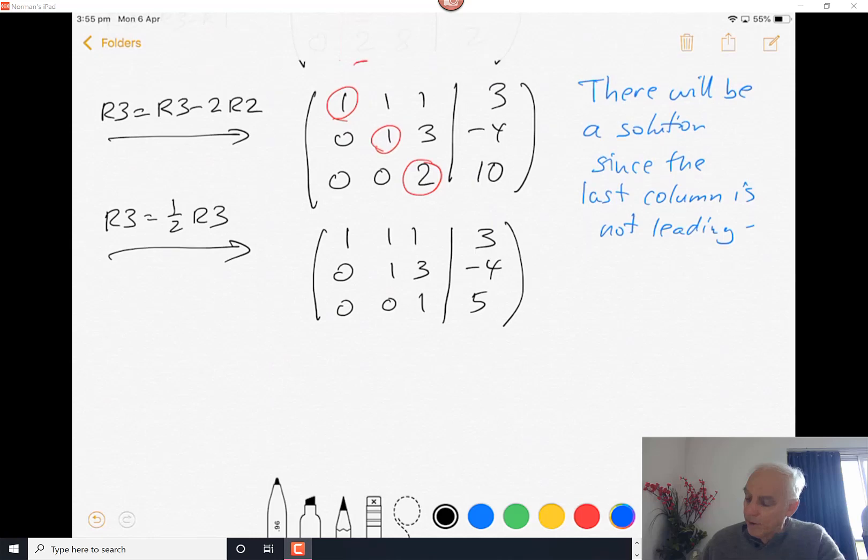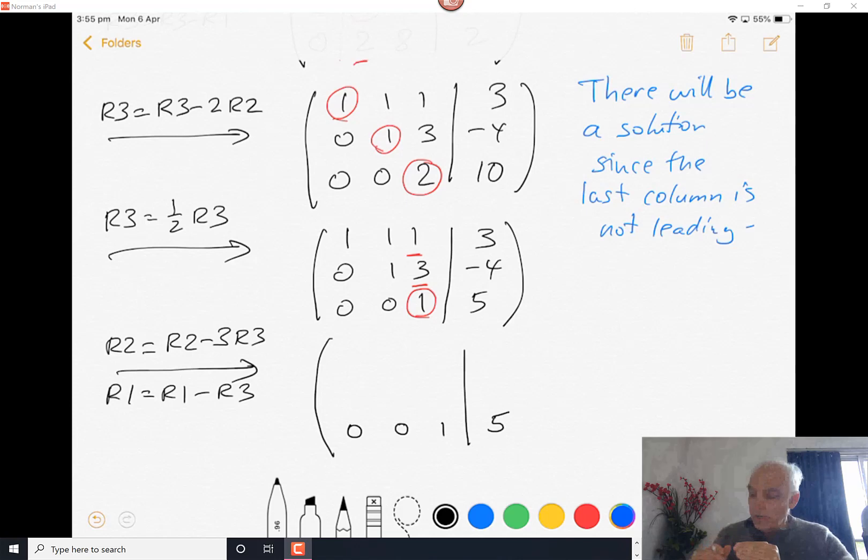And now we're going to do this reverse thing where we start with this as a pivot entry and use it to get rid of the entries above it. The new row 2 is going to be the old row 2 minus 3 times row 3. It's perhaps appropriate to start at the bottom because that stays where it is. The new row 2 is the old row 2 minus 3 times row 3, so we get 0, 1, 0, and minus 4 minus 3 times 5, so that's minus 19. And the first row we have to just subtract the third row, so we get 1, 1, 0, and 3 minus 5 is minus 2.